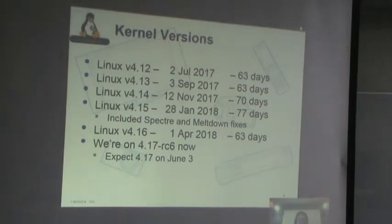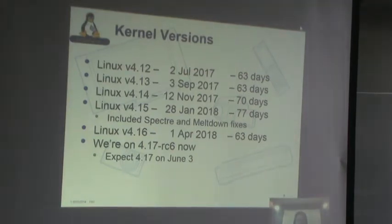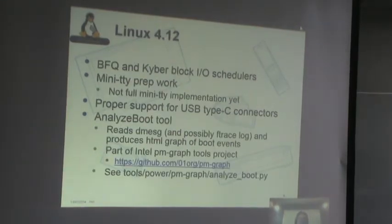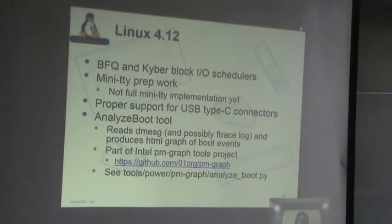We're currently on 4.17 RC6. Things are looking pretty good, so I would expect we'll have another 63-day cycle and should see that kernel a week from Sunday. Just looking quickly at some of the things in these different releases — a lot of these slides you've seen before, so I'm not going to focus on some of the older kernels from a year ago.